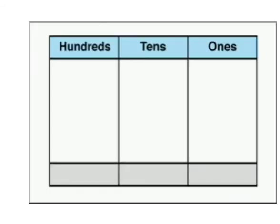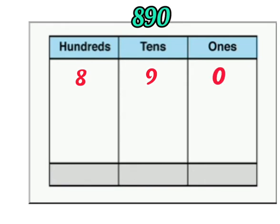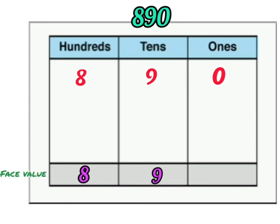Now let us solve one more example. Look at the number 890. Here, 8 is placed in the hundreds column, 9 is placed in the tens column, and 0 is placed in the ones column. What is the face value of each digit? The face value of 8 is 8 itself. The face value of 9 is 9 itself. And the face value of 0 is 0 only.